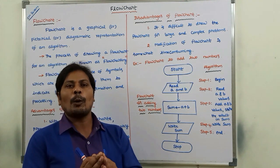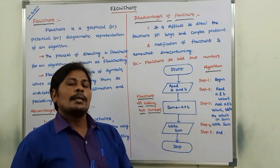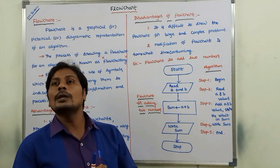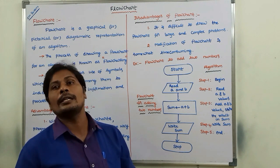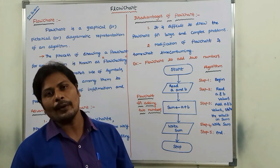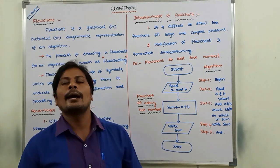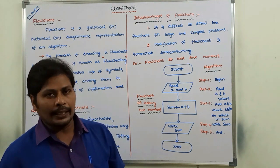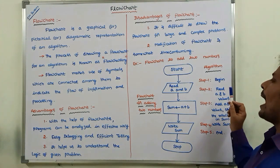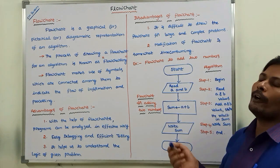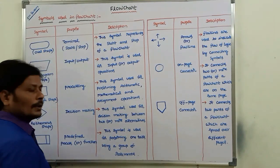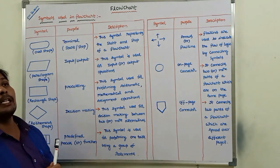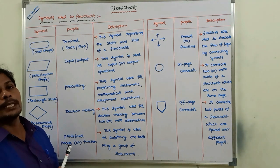Suppose we are taking one problem for which we have already drawn the flowchart. If any modification is done in the logic of that problem, we have to redraw the flowchart entirely. Modifying the flowchart can take considerable time. This is the flowchart to add two numbers. Now we can go over what are the symbols used in the flowchart and what is the function of each and every symbol used in flowchart.